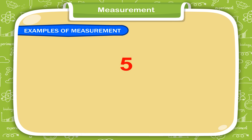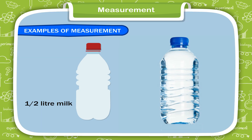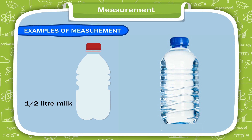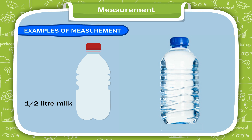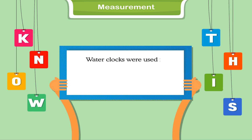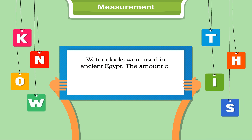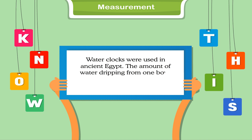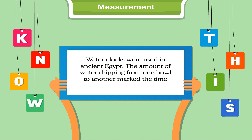5. We buy milk and other liquids in litres. Thus, we see that measurement is a very important and necessary part of our daily life. Know this: Water clocks were used in ancient Egypt. The amount of water dripping from one bowl to another marked the time past.